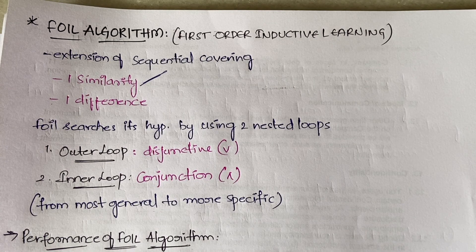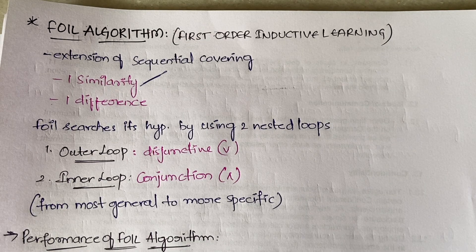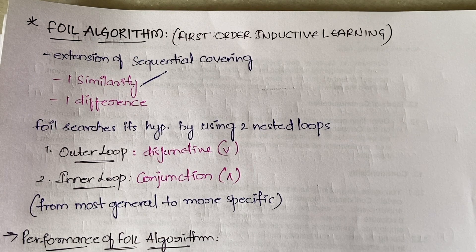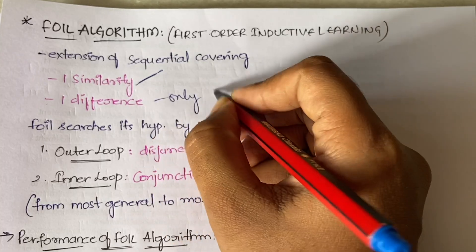The key difference is that FOIL learns a rule only when the target literal is true. If you learned a condition and at the end it turned out to be false, everything learned was wasted. Sequential covering learns the entire thing irrespective of whether it is true or false, whereas FOIL learns a rule only when the target literal is true.